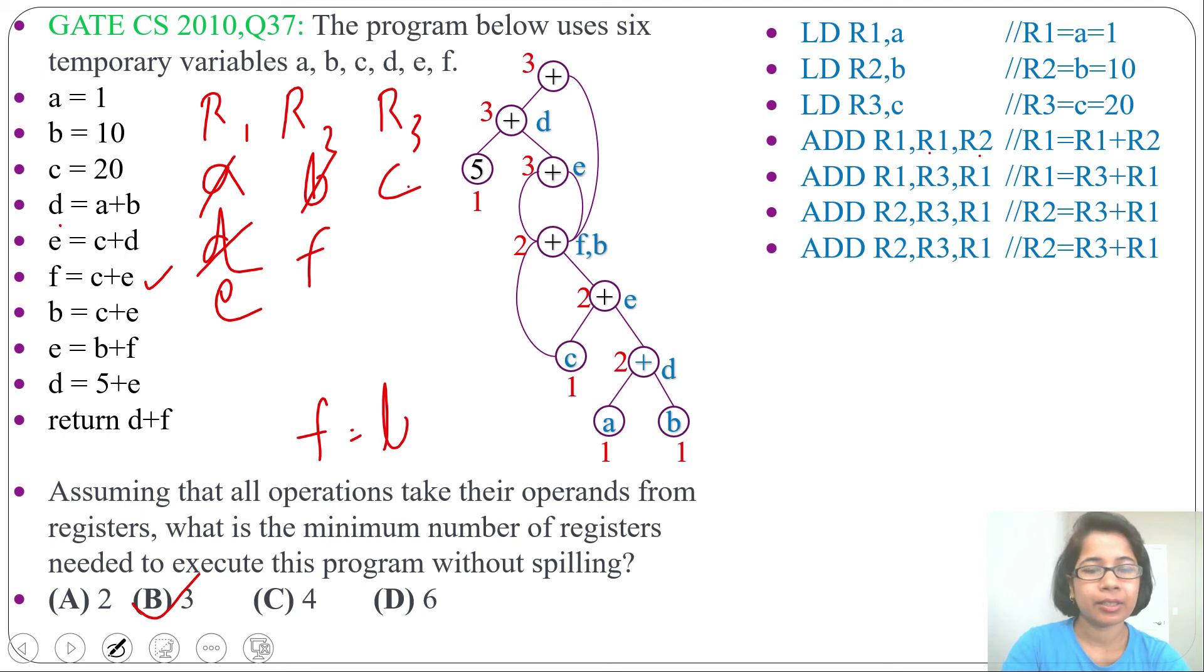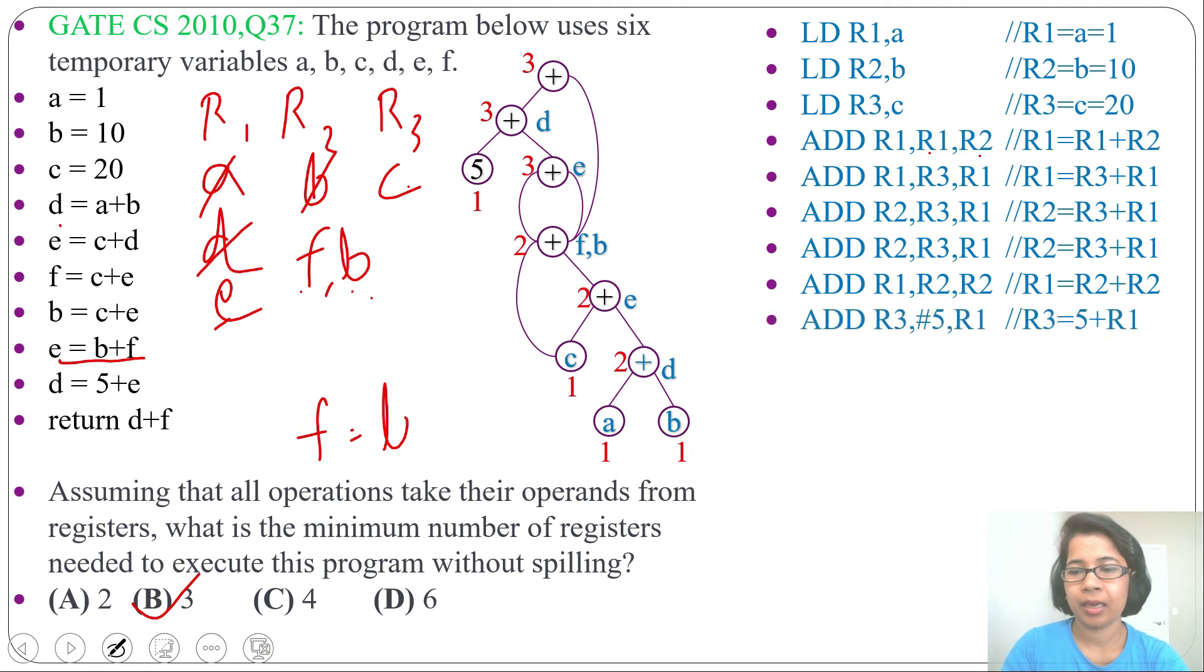Next E equal to B plus F. B, F both are in R2. So write down add R1, R2, R2. Now result will be in E. So R1 contain E. R2 contain B and F. Next D equal to 5 plus E. 5 we can add directly. Add R3, R5 that is for number 5, R1. Now R3 will contain D.